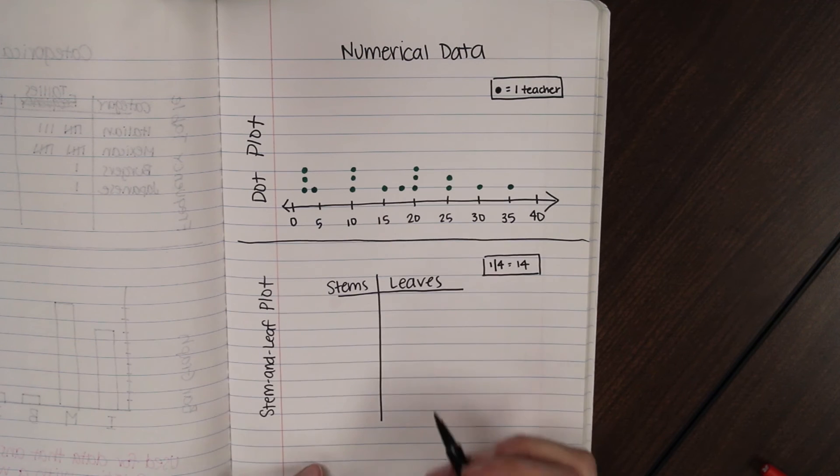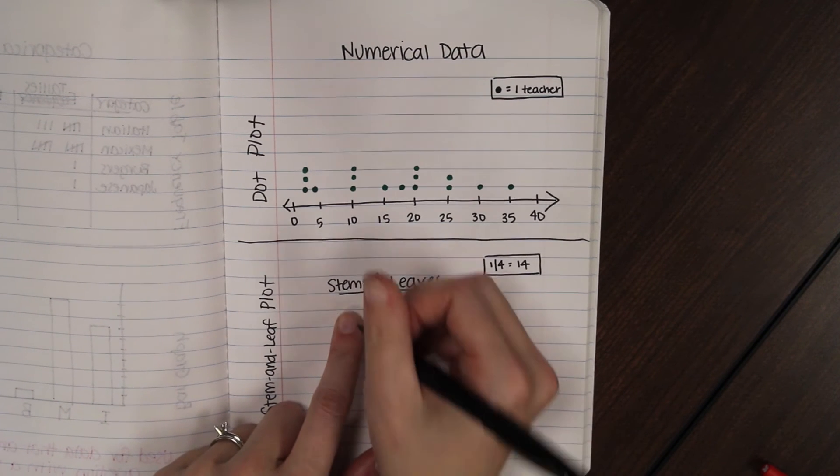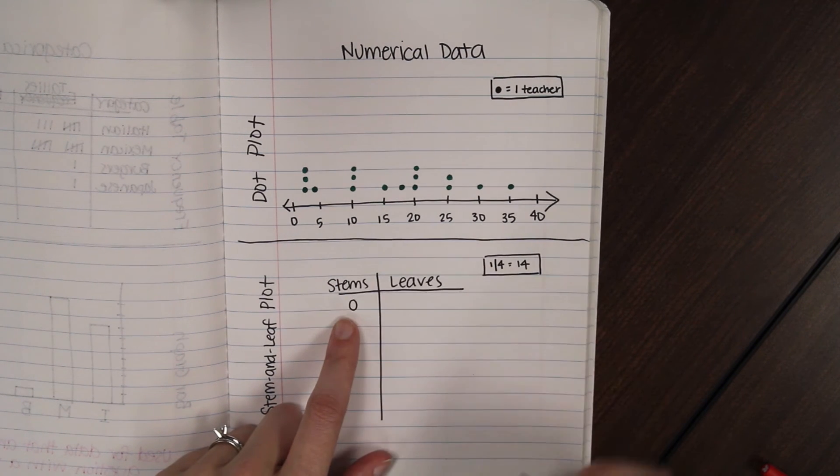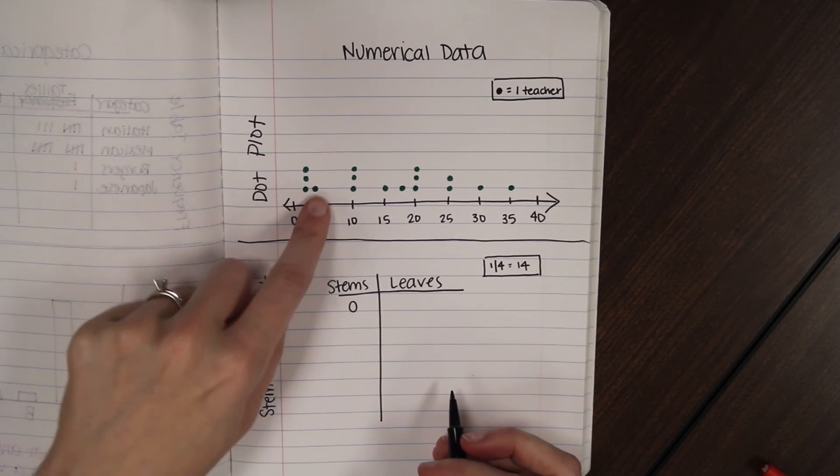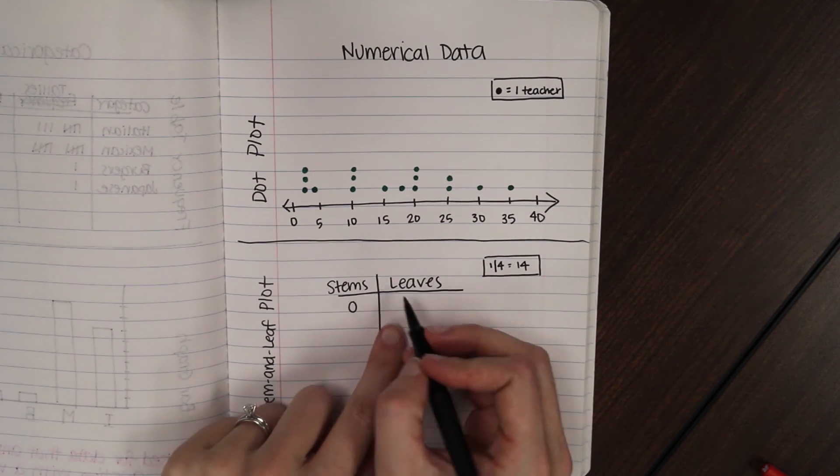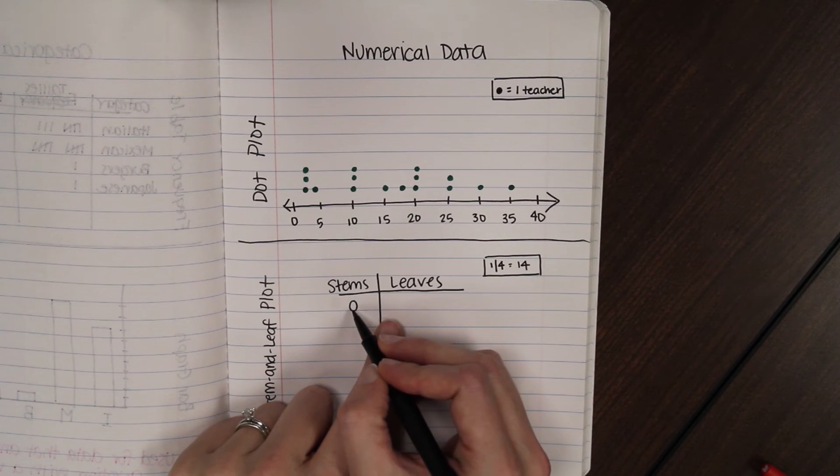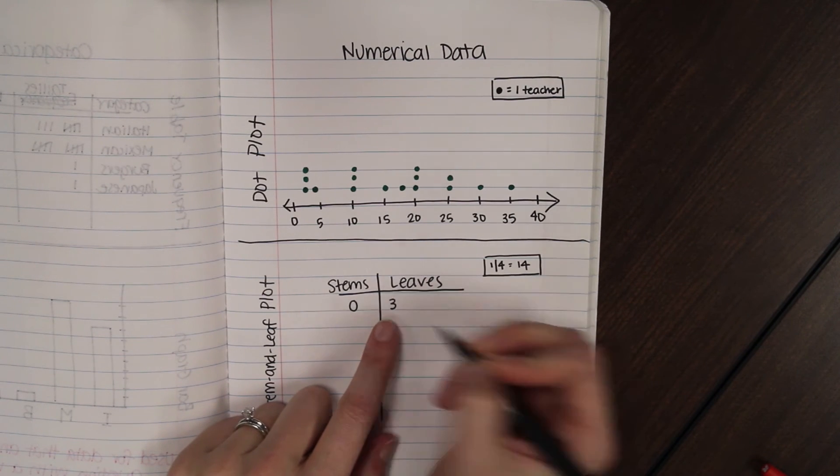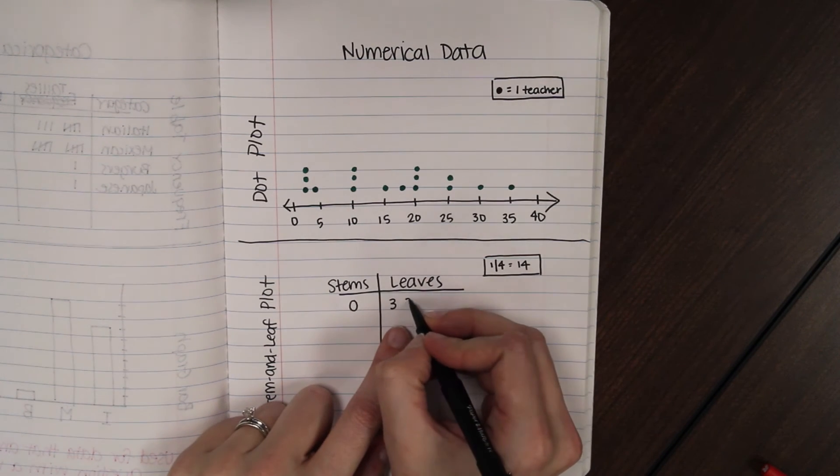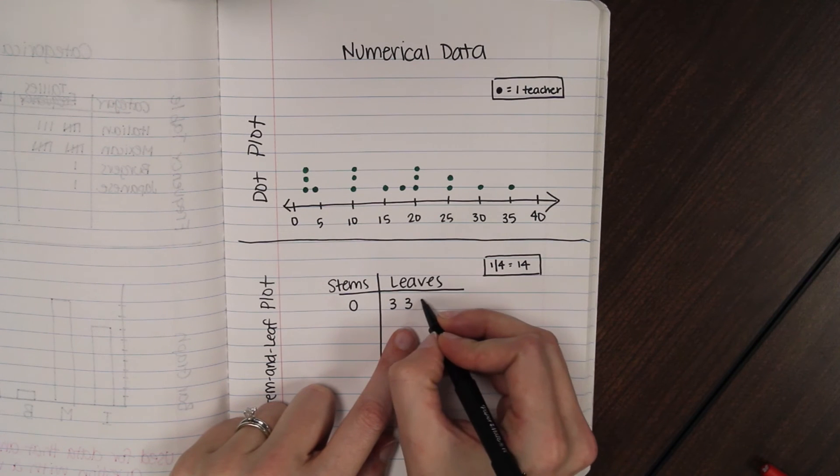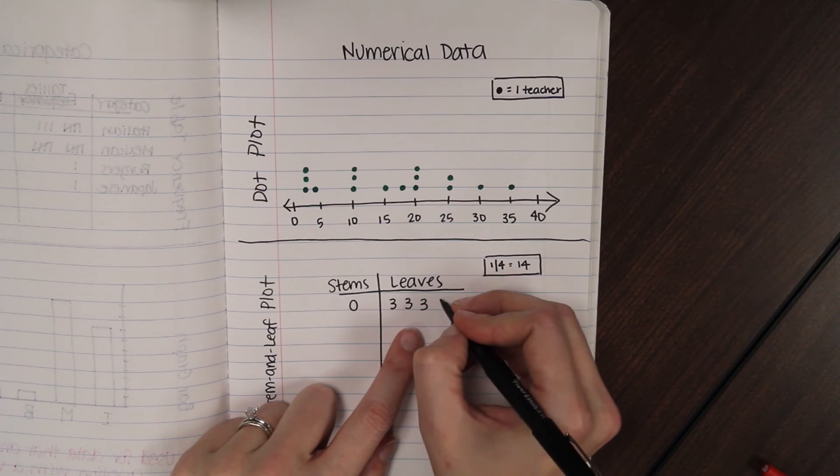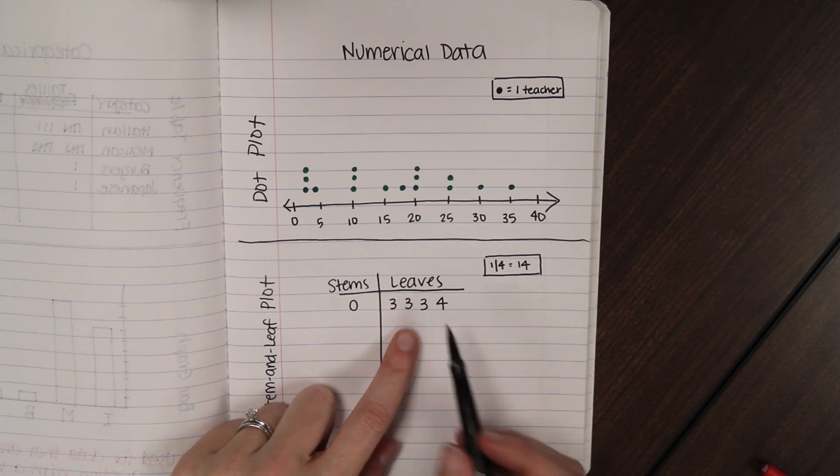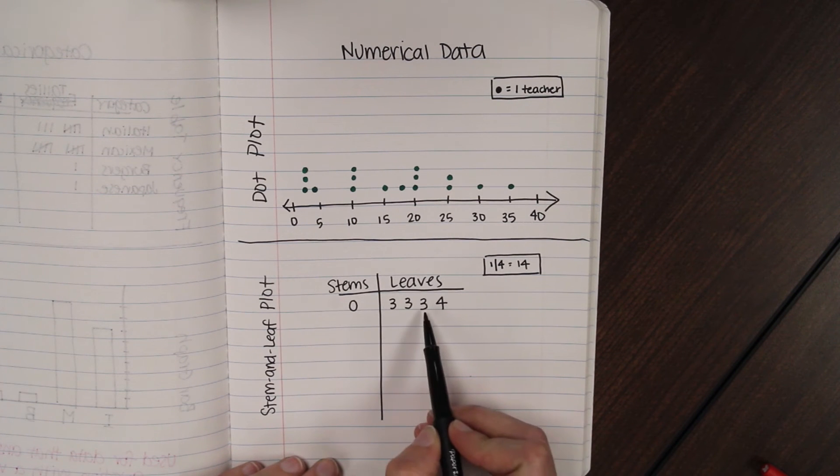Alright, so we're going to put our data in here. When we have zero tens, start with that. We have a couple of numbers that have zero tens. We have these threes and the four. So, we're going to put, we have three threes. We'll say zero tens, three ones. Zero tens, three ones again. Zero tens, three ones again. Zero tens, four ones. So, this tells me so far I have a three, a three, a three, and a four.